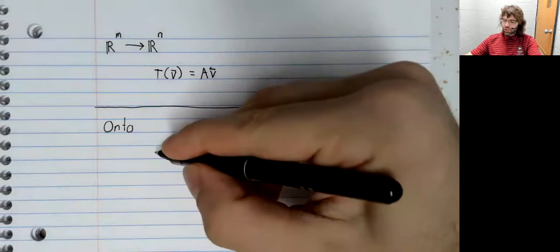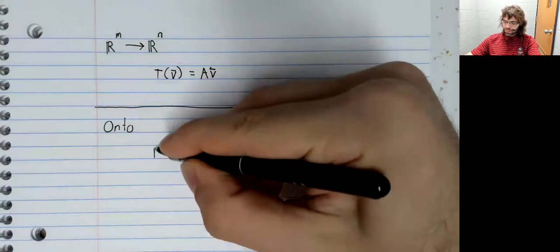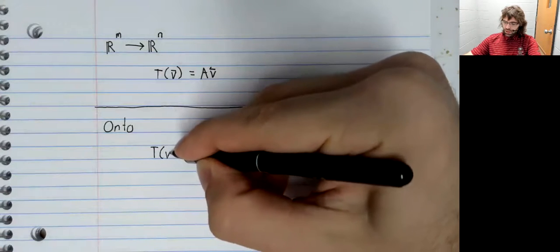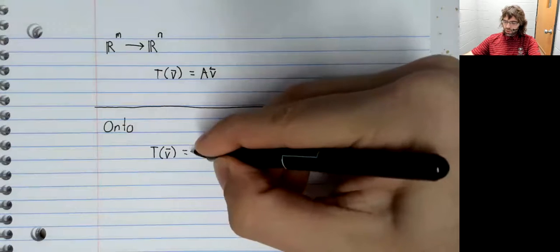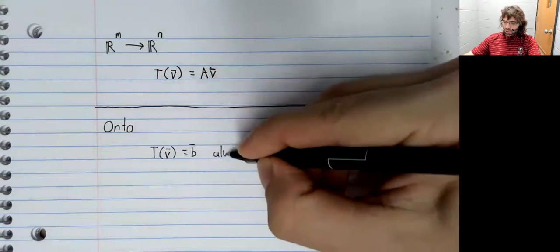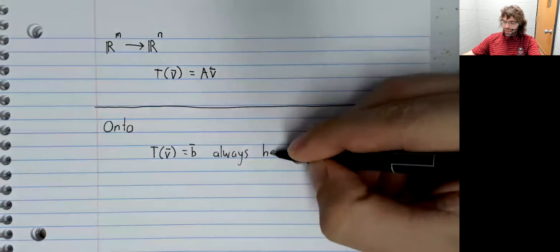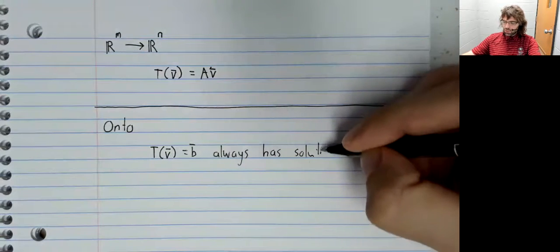A transformation is onto if T of V equals B always has a solution.